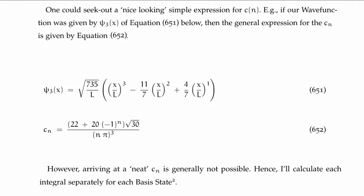If you actually compute Fourier's trick for this particular wave function describing a particle in an infinite potential well, you get a really neat-looking expression for the probability amplitudes for all of them because it's a function of n. That sort of neat function rarely actually occurs, hence usually you have to calculate each of the integrals corresponding to each of the c sub n's separately.